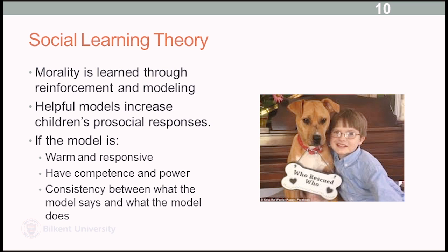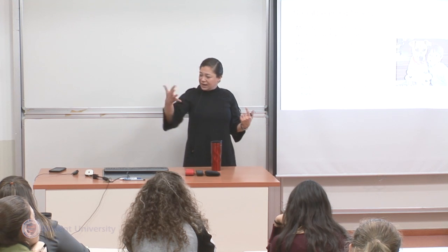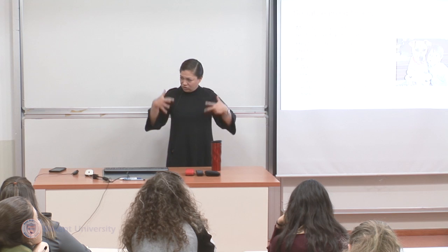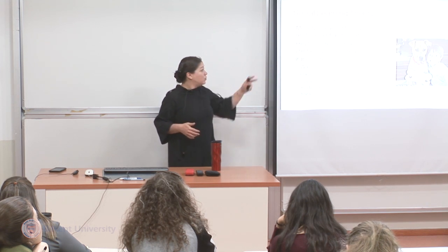Another theory that looks at the development of morality is social learning theory. In this theory, morality is learned through reinforcement and modeling. Culture does a lot to teach children. It is acknowledged that it is quite impossible for all children to learn by conditioning alone, because the amount of experience in the world may not be varied enough to allow for that. But children also learn through watching others' behavior. In this context, helpful models increase children's prosocial responses — if they are looking at adults who are good models of moral behavior, they will internalize these.